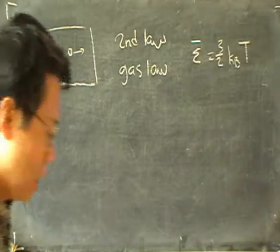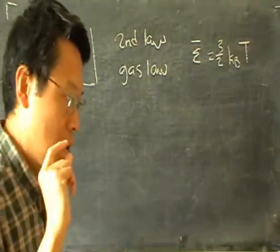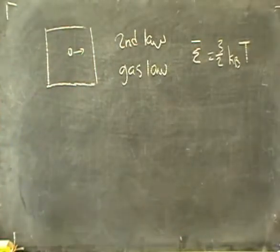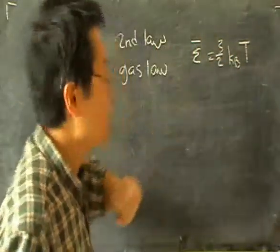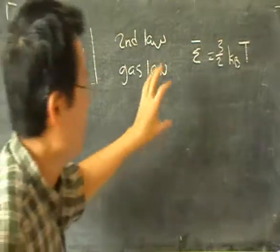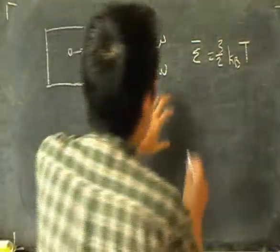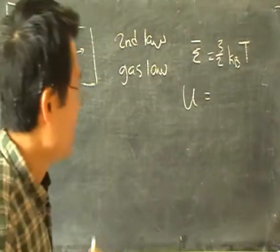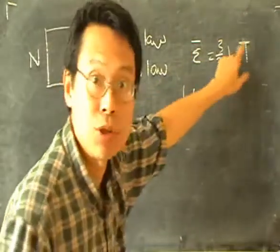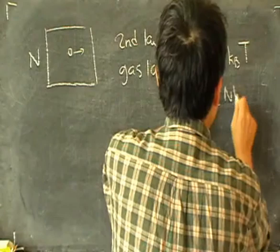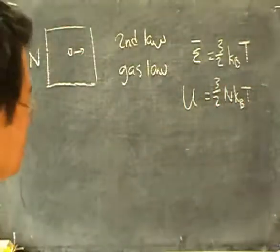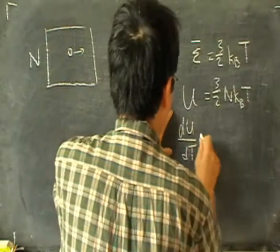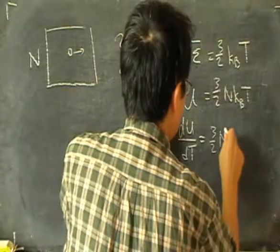Now, as before, we are going to eventually use statistical mechanics to calculate the heat capacity of this ideal gas. Based on this formula obtained from the kinetic theory, we can write down an expression for the ideal gas if we first write down the total energy. The total energy of the particles, if there are n particles in this gas, is obtained by multiplying the average energy by n. Then we can get the heat capacity if we differentiate the total energy by temperature, giving 3/2 k_B T.